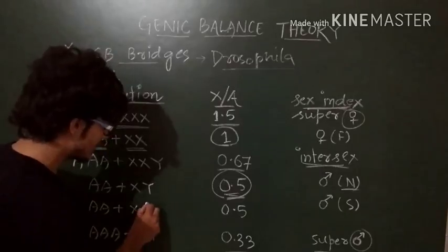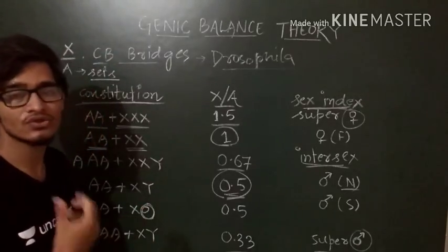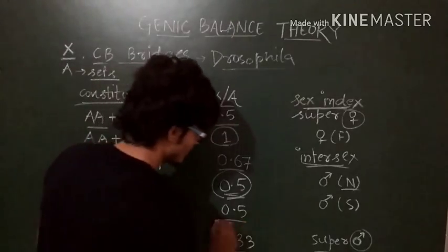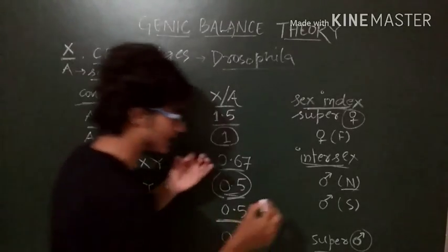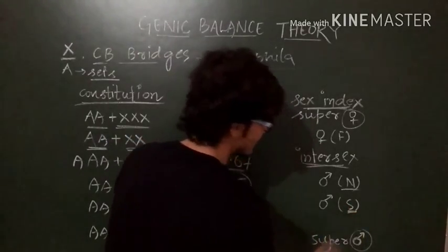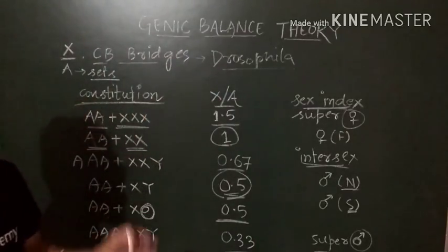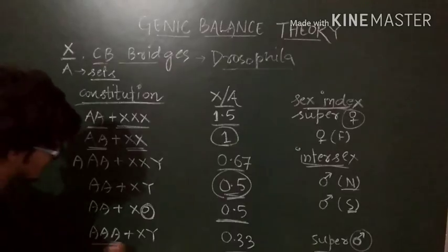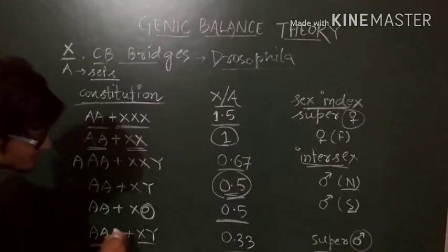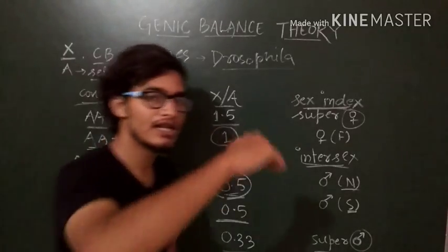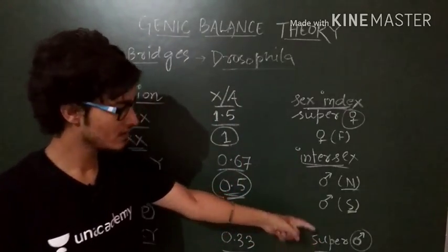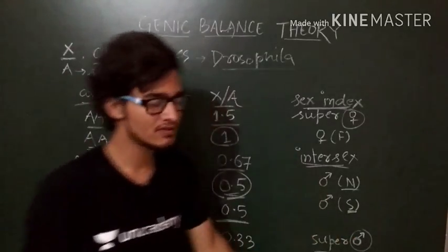It means that it is lost due to some condition. If it is lost, it is 0.5 and it is male, but no fertility is there. After that, triple A, XY, that is 1 by 3, 0.33, less than 0.5, super male will be there.